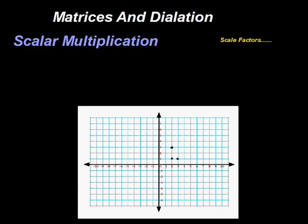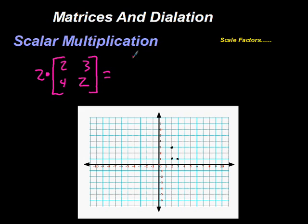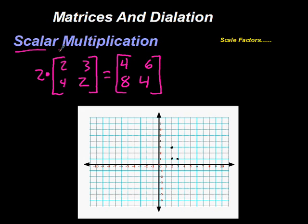What is scalar multiplication? If we have a matrix with entries 2, 3, 4, 2 and multiply it by 2 in front, the result has the same dimensions: 2×2=4, 2×3=6, 2×4=8, and 2×2=4. That's scalar multiplication. The scale factor is how much we're going to dilate something.